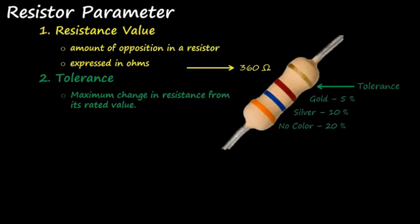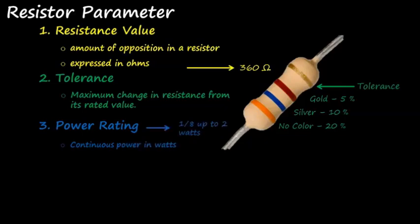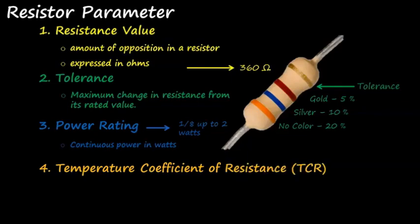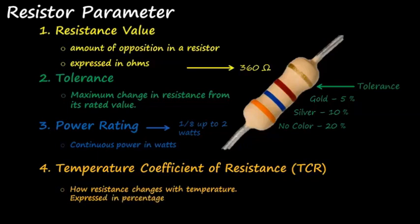Number three is the power rating. Resistors' power is measured in watts, beginning from 1/8 watt up to 2 watts, specifically in carbon type resistors. The fourth parameter is the TCR — temperature coefficient of resistance — which describes how resistance changes with temperature, expressed in percentage. The TCR defines the change in resistance as a function of ambient temperature, commonly expressed in ppm per degree Celsius, which stands for parts per million per centigrade degree.